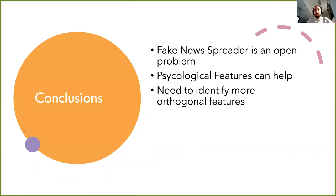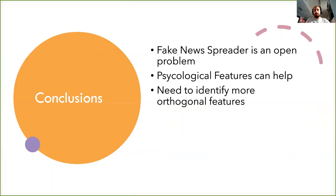In conclusion, we think that fake news spreading is still an open problem, but we found that psychological features can help to identify spreaders and enrich the feature space to address this problem. We believe that future work could focus on identifying other orthogonal features rather than training ever more powerful machine learning models — specifically, we should focus on extracting new sets of features that explain the behavior of fake news spreaders. Thank you for your attention.